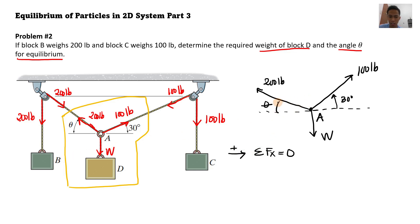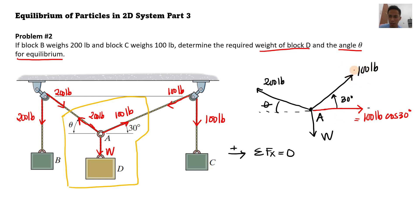The forces acting on the x-axis — we have the x-component of 100 pounds and the x-component of 200 pounds. For 100 pounds (call it F1), the x-component F1x is 100 pounds cosine 30 degrees because it is the adjacent side. Its y-component F1y is directed upward — that is 100 pounds sine 30 degrees because it is the opposite side.